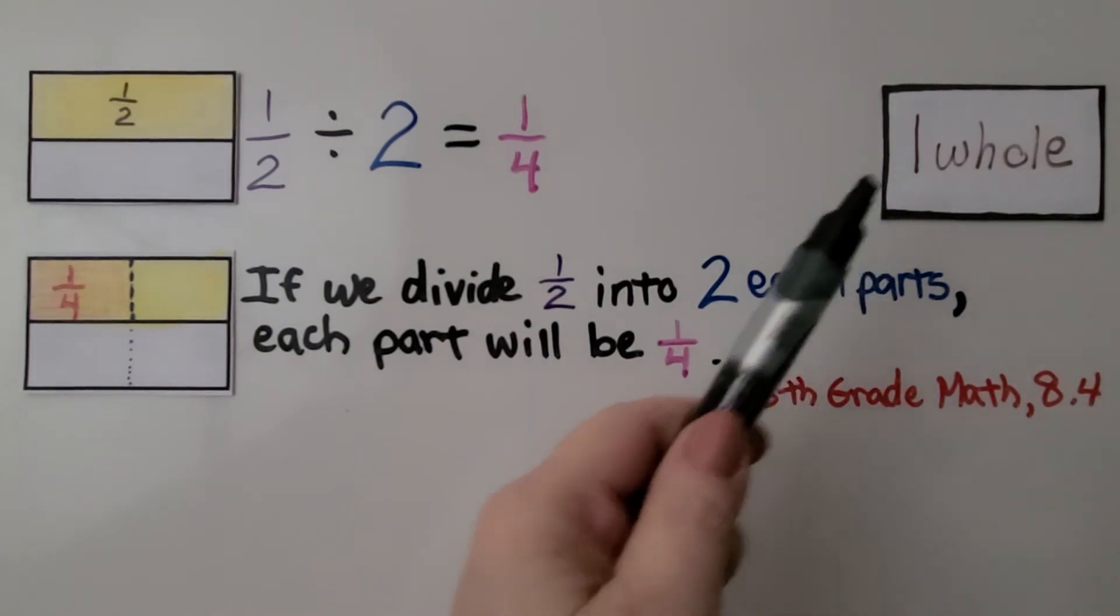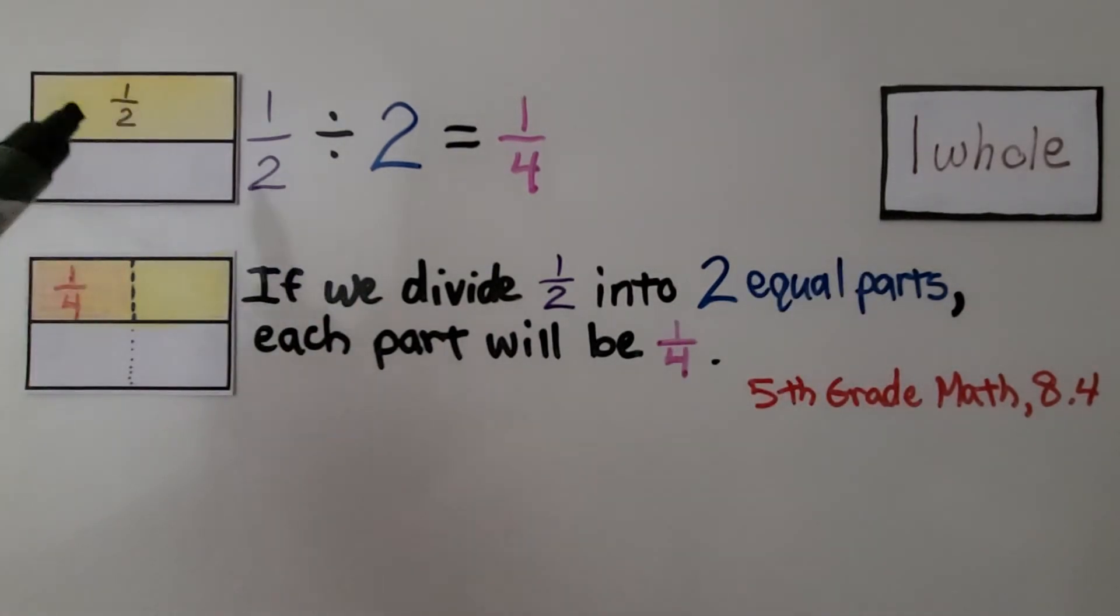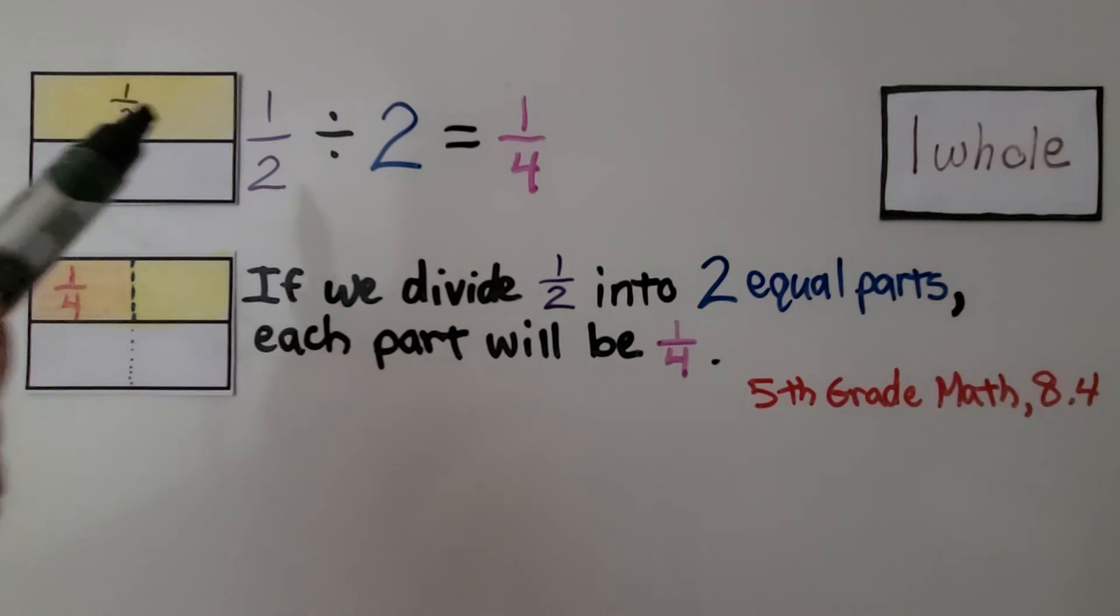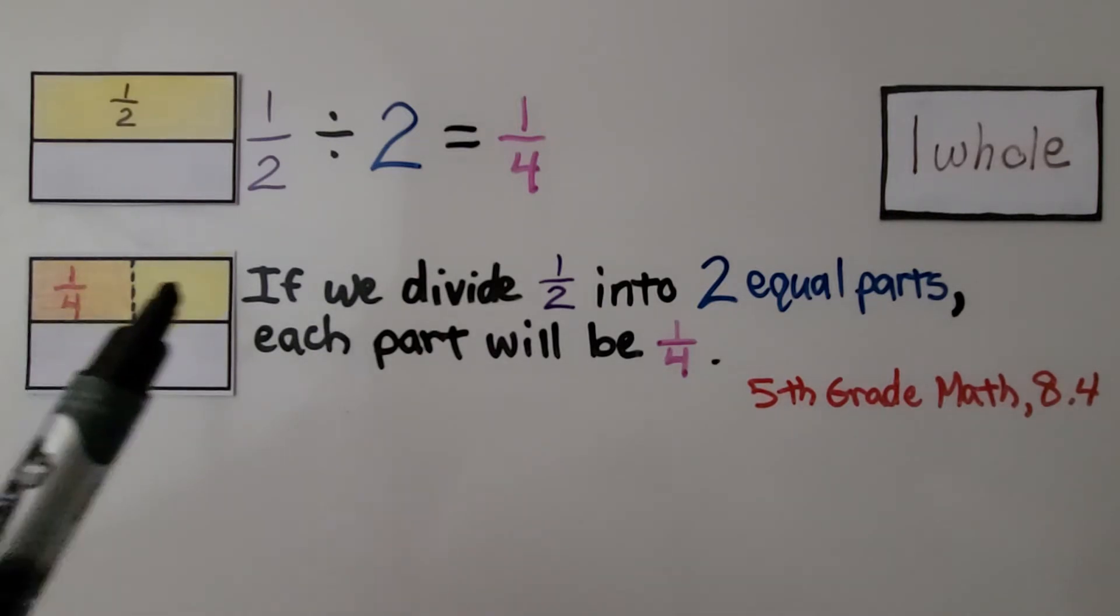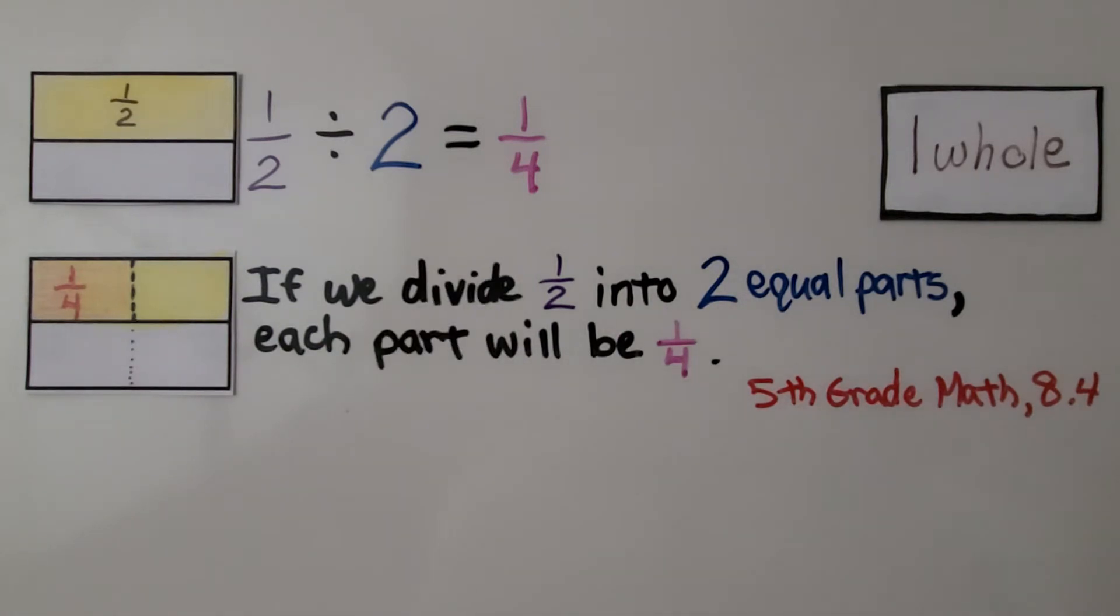Here we have one-half divided by two. So if this is one whole, then this is half. We need to split this half into two. If we do, like right like this, that means it's going to be one-fourth. If we divide half into two equal parts, each part will be one-fourth. So the quotient is one-fourth.